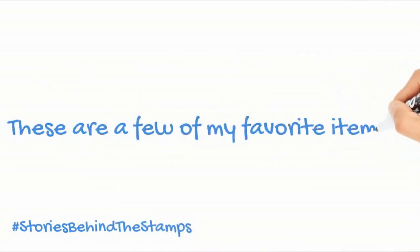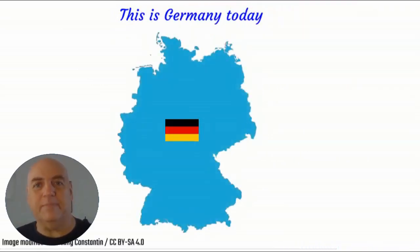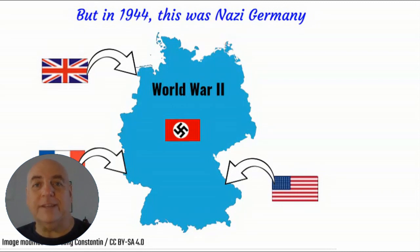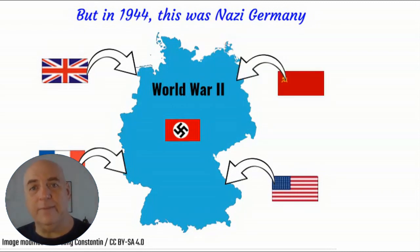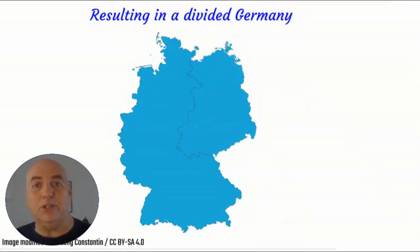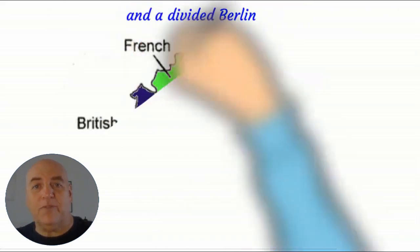Here we have a map of Germany — of today, more or less — but in 1944 it didn't look like that, because in 1944 Germany was under Nazi control. World War II was going on and Germany was invaded by the Allies: Britain, France, the United States, and Russia, or the Soviets. Eventually Germany was divided into four different zones.